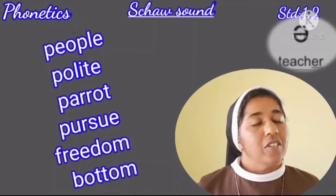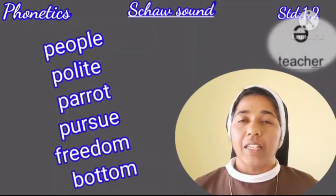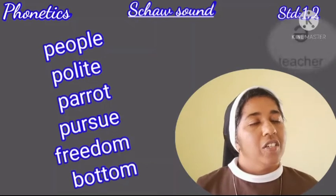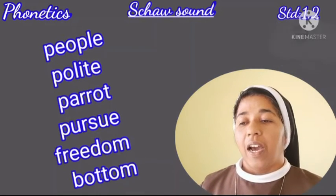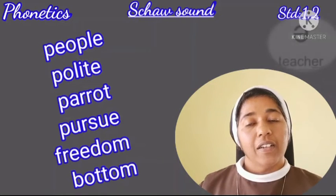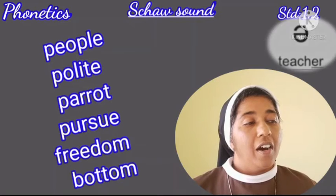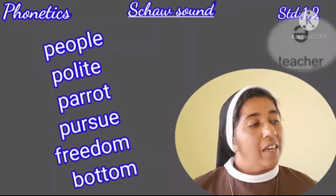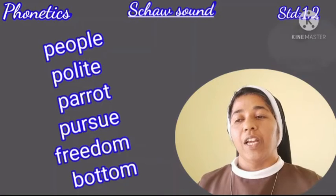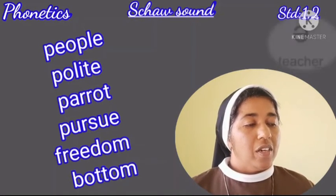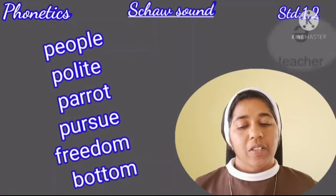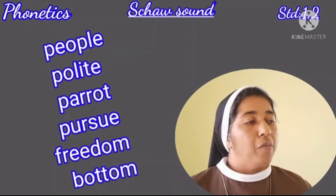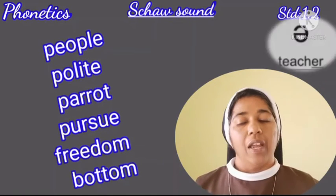More examples with schwa in the middle: 'polite' — the schwa appears after the first P. 'Parrot' — spelled P-A-R-R-O-T — the double R sounds as one R, and you will see the schwa right before the last letter T. 'Pursue' — meaning something you aim for, look for, or try to achieve and gain in your life. The schwa appears after the first P.